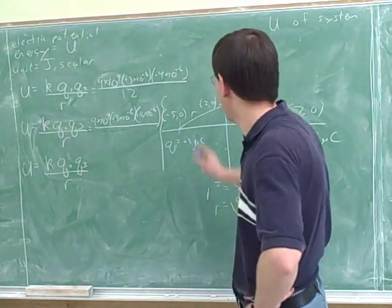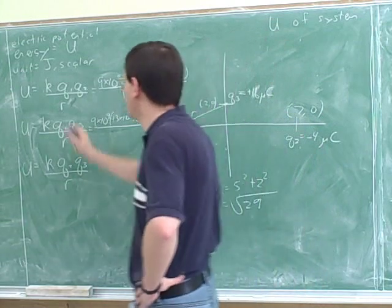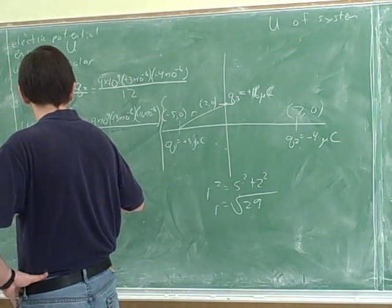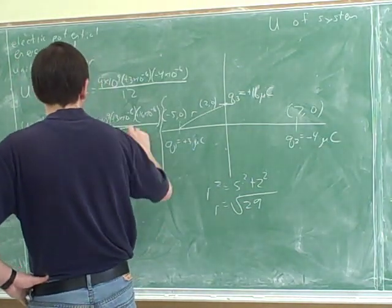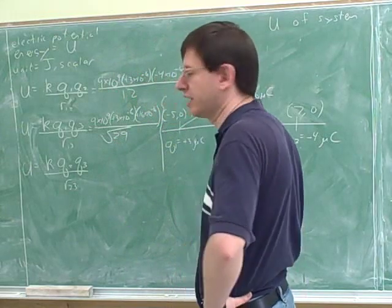So it's good that you saw that we have to use the Pythagorean theorem here to find the distance between these two points. So all these r's stand for different distances. This is the distance between 1 and 2, between 1 and 3, and between 2 and 3. And again, this is r, not r squared. So this would be root 29. Good.